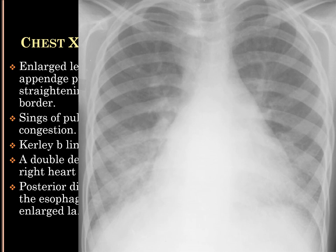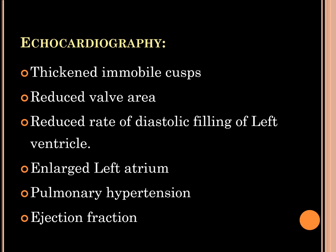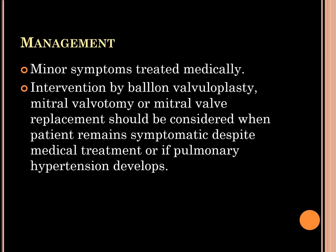On the chest X-ray image, this shows straightening of the left heart border and increased left atrial shadow. Echocardiography is diagnostic — it shows severity, thickened and immobile cusps, reduced valve area, reduced rate of diastolic filling in the left ventricle, enlarged left atrium, and pulmonary hypertension. Doppler will show the pressure gradient across the valve.